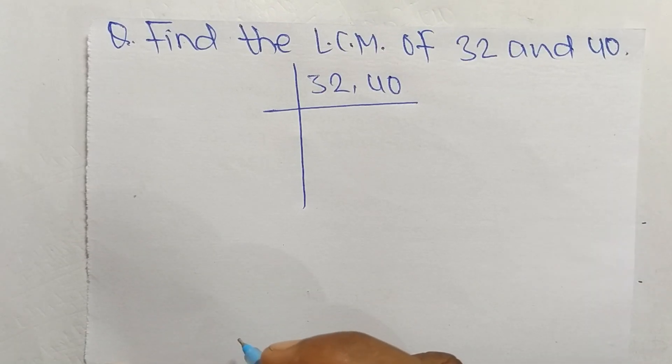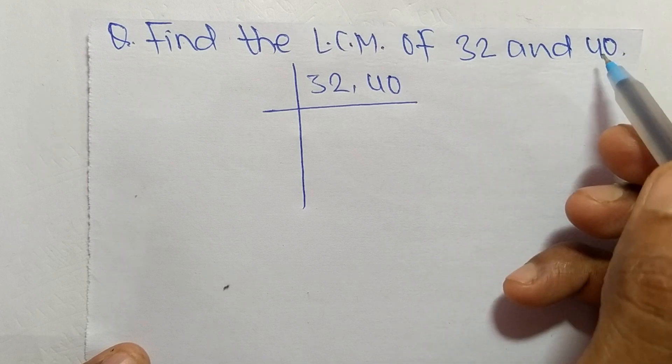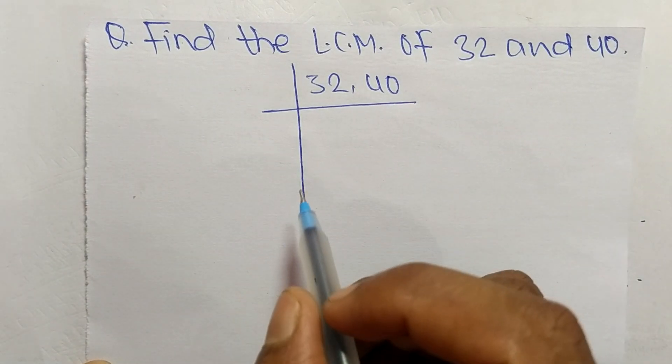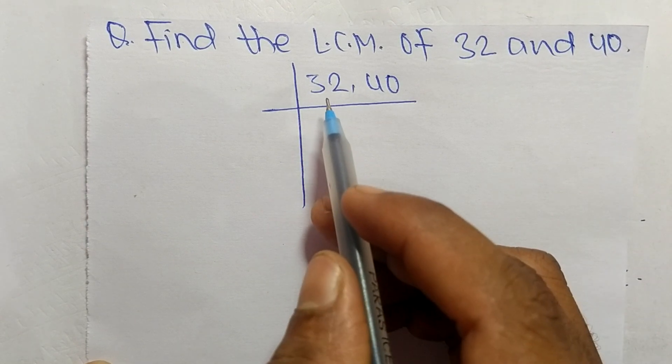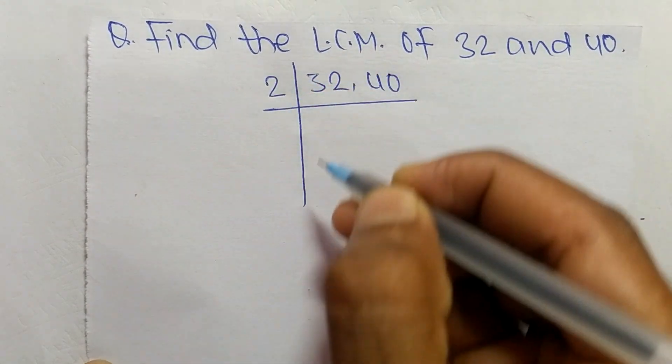Today in this video we shall learn to find the LCM of 32 and 40. To find LCM, first we choose the lowest number that can exactly divide 32 and 40. So the number is 2.